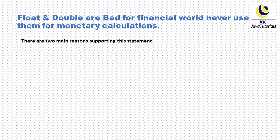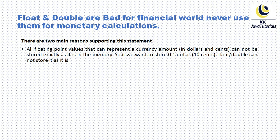Float and double are basically bad for the financial world — never use them for monetary calculations. There are two main reasons supporting this statement. First, all floating point values that can represent a currency amount in dollars or cents cannot be stored exactly as-is in memory. If we want to store 0.1 dollar or 10 cents in a double or float, it cannot be stored as it is.